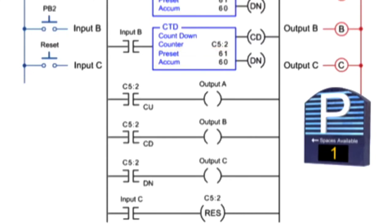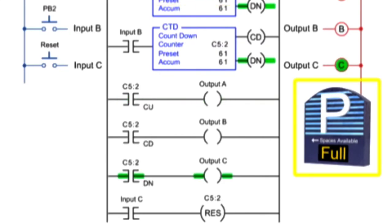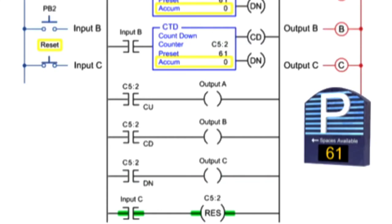When the accumulated value reaches the preset value, the counter done bit enables output C and 'full' is displayed. Both counters are reset using the reset, or RES, control bit addressed the same as the counter file.